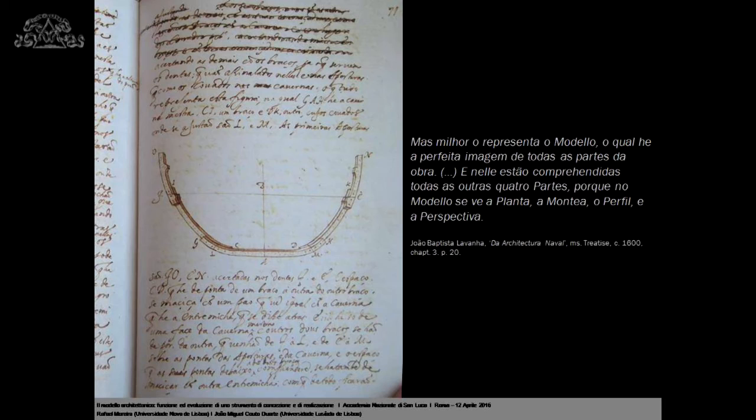References to architectural models became rarer. João Batista Lavanha, after six years in Italy from 1572 to 1578, praises the use of models as the way to visualize a project before building, and I quote: 'It is best represented by the model, which is the perfect image of all parts of a work. It embraces all other four parts, because in the model we see plan, section, profile, and perspective.' But this is a theoretical assertion loosely based on Alberti.